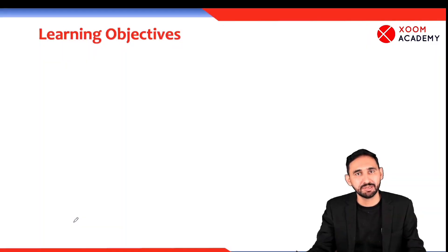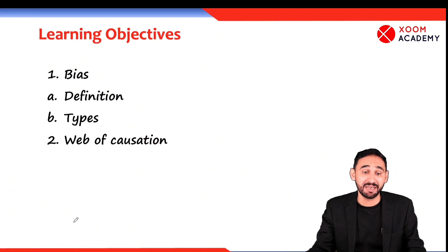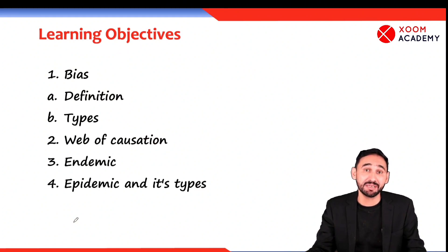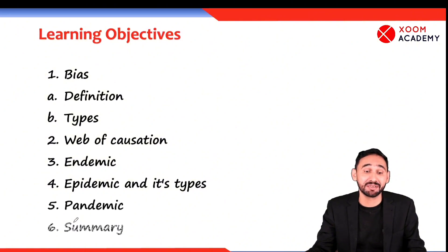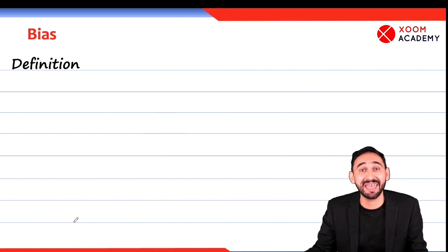Continuing with epidemiology, we will discuss this session according to the following learning objectives: we'll discuss bias, various types of bias, we'll define bias, then what is web of causation, what is endemic, epidemic and its types, and pandemic.